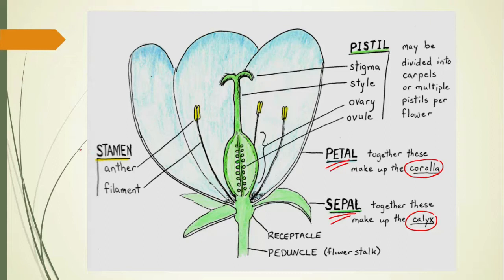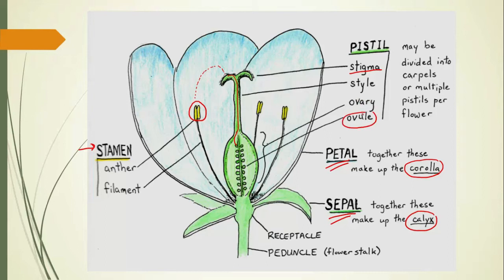Now on to the stamen — this is the male part. It produces pollen up in the anther, and the filament just holds it. That pollen then drifts off or is carried by some sort of insect and lands on the stigma, the sticky part of the pistil. Sometimes they're feathery, sometimes they're really sticky like with some sort of resin. Hopefully that pollen lands on a different flower, but they can sometimes self-pollinate. That pollen is going to germinate and grow all the way down this long style and fertilize one of the ovules contained in the ovary. Those ovules become seeds, which we'll talk about later.